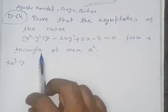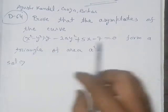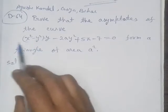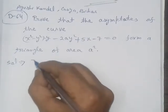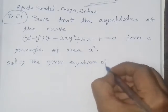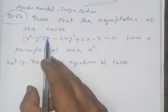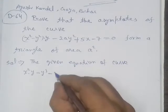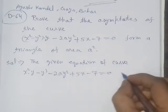We will first find three asymptotes from the given equation of the curve. The maximum power from the equation is 3. We expand the given curve equation: x² into y minus y³ minus 2ay² plus 5x minus 7 equals 0. This is equation number 1.